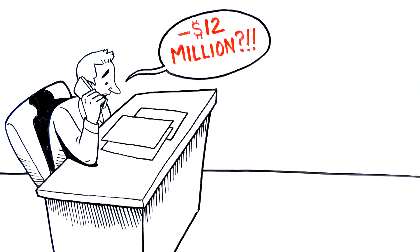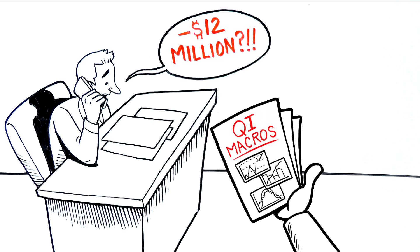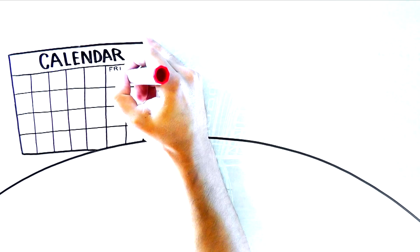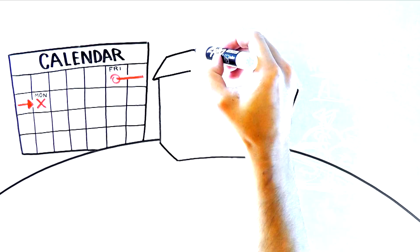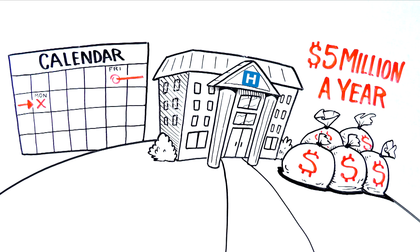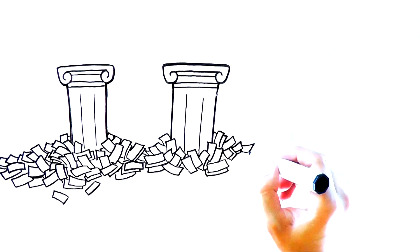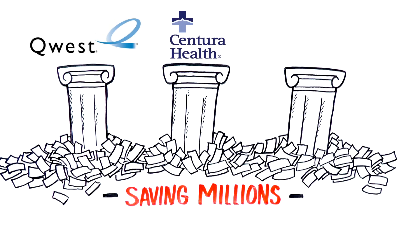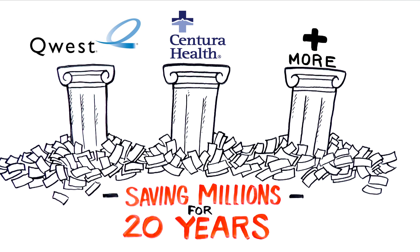Take one of his clients, a healthcare company. It was losing $12 million a year due to denied insurance claims. Using Jay's QI Macros, they determined that one insurance company was the cause of most of the problem. Jay showed them the issue on a Friday morning, they figured out a solution that afternoon, and by Monday they had implemented a solution that saved the company $5 million a year. Everything from multinationals to mom-and-pop shops can benefit from Jay's systems. He's worked with a who's who of the business world, saving millions for companies like Quest, Centura Health, and many more during his two decades in the industry.